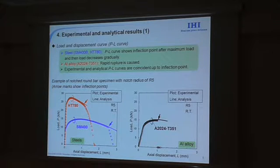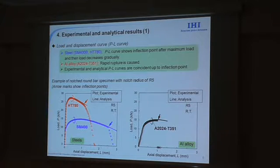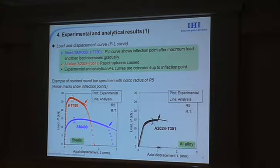I'll show you examples of load-displacement curves. For steels, we can see inflection points after maximum load, and then load decreases gradually. On the other hand, aluminum alloy has rapid rupture around maximum load. We can see that experimental and numerical results are coincident up to the inflection points.